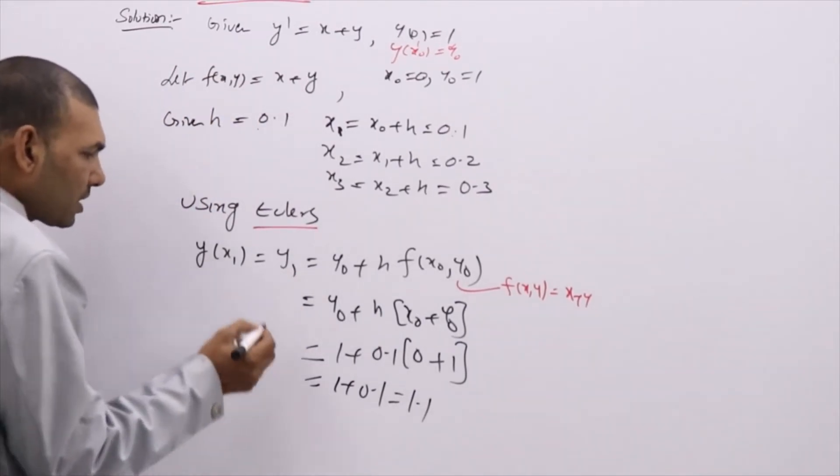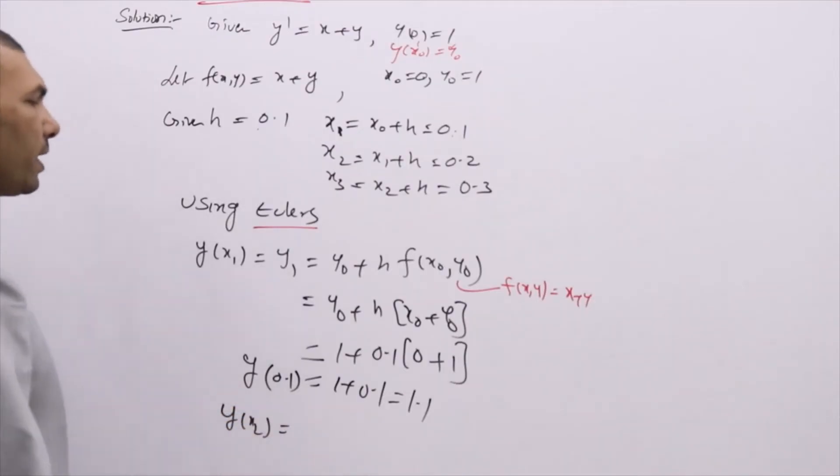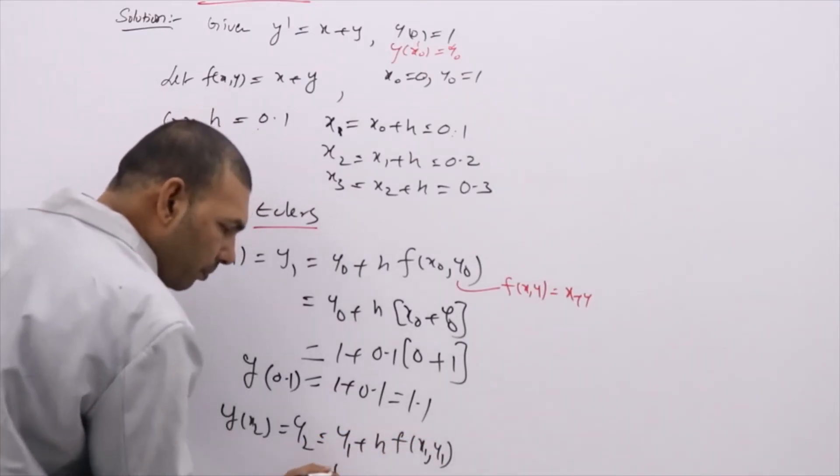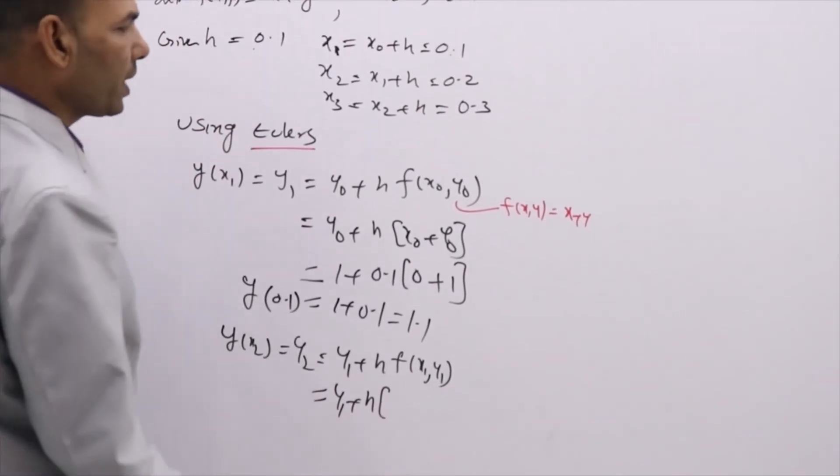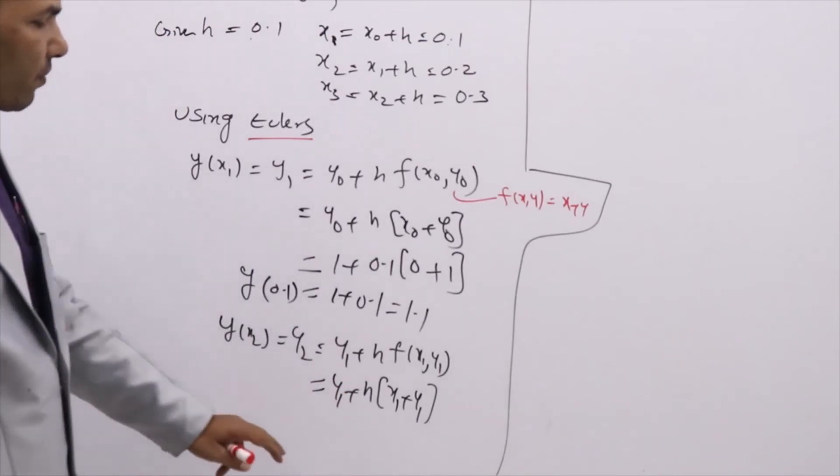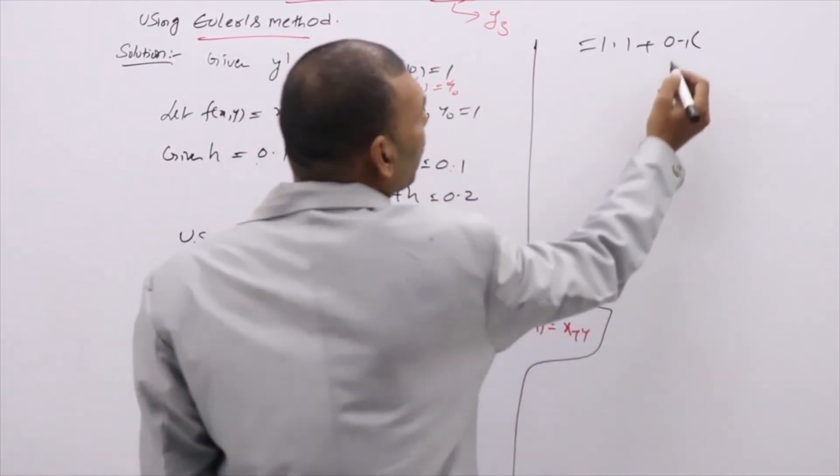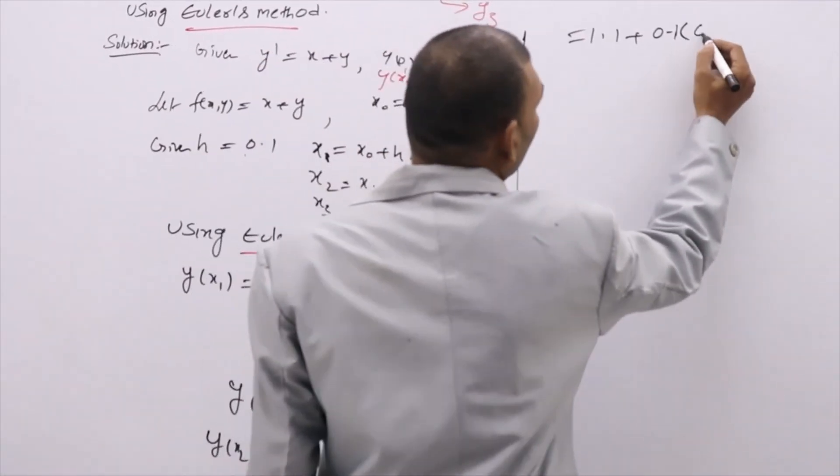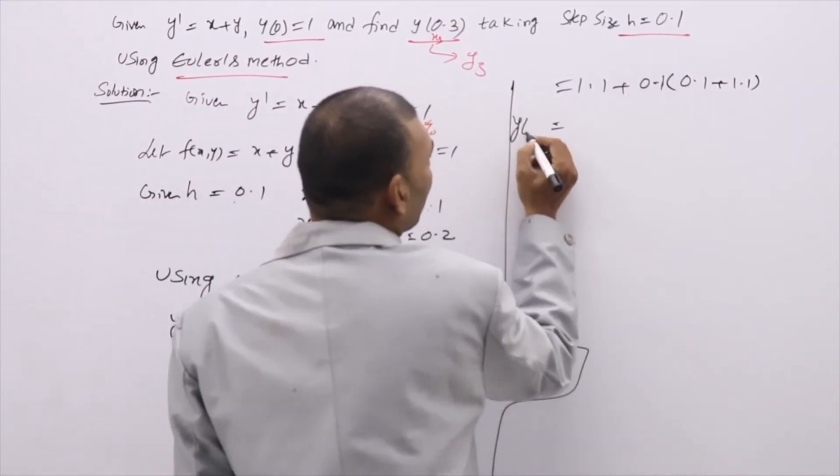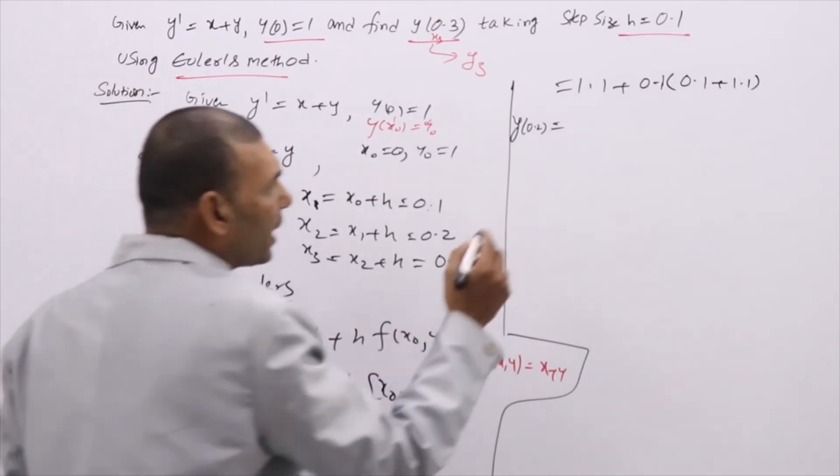This is y₁, that is y(0.1) value. Next, y(x₂) that is y₂ we need to find. The formula for y₂ is y₁ + h·f(x₁, y₁) = y₁ + h·(x₁ + y₁). Now write x₁ value, y₁ value, h value. y₁ we evaluated just now: 1.1 + 0.1·(0.1 + 1.1). Now enter these values in your calculator to get y(0.2): 1.1 + 0.1(0.1 + 1.1) = 1.22